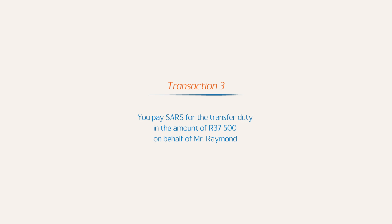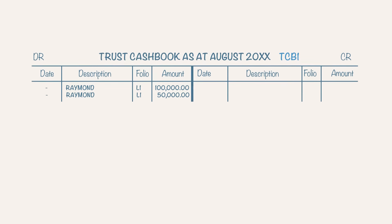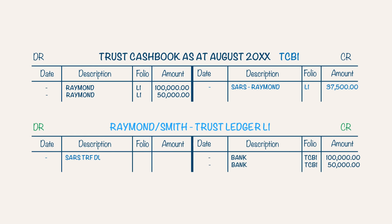Transaction 3: You pay SARS for the transfer duty in the amount of R37,500 on behalf of Raymond. The firm is paying the money received for the costs to SARS. This results in a reduction of the amount held in the trust cash book as well as the balance in the trust ledger account of Raymond/Smith. Therefore, you credit the trust cash book and debit the trust ledger of Raymond/Smith.